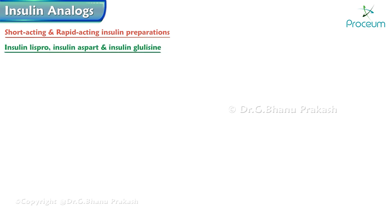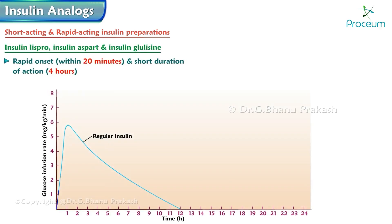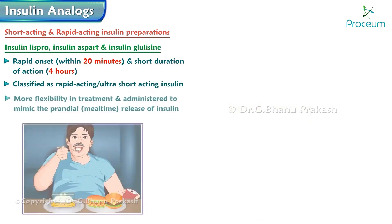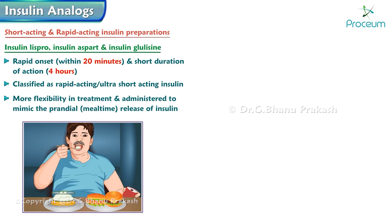Insulin lispro, insulin aspart, and insulin glulisine have rapid onset within 20 minutes and short duration of action of four hours. They are classified as rapid-acting or ultra short-acting insulin. Because of these properties they offer more flexibility in treatment and are administered to mimic physiological insulin secretion.